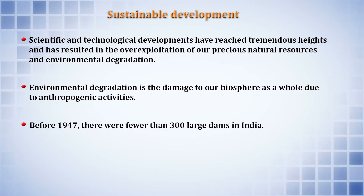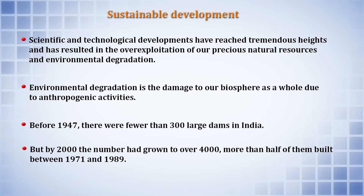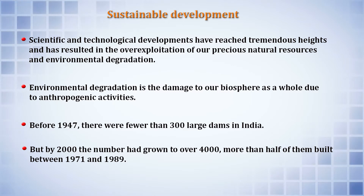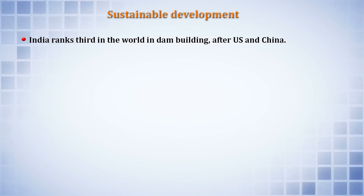Before 1947, there were fewer than 300 large dams in India. But by the year 2000, the number had grown to over 4,000, and almost 50% were built between 1971 and 1989. In dam building, India ranks third in the world after the United States and China.